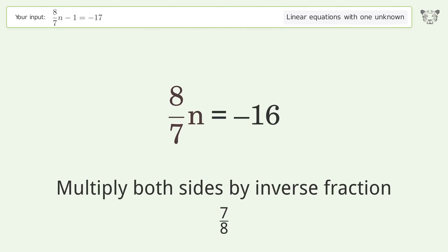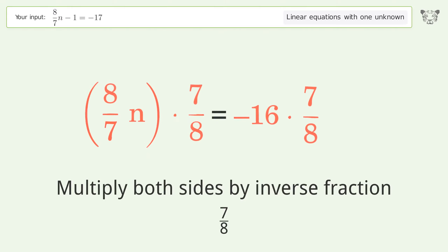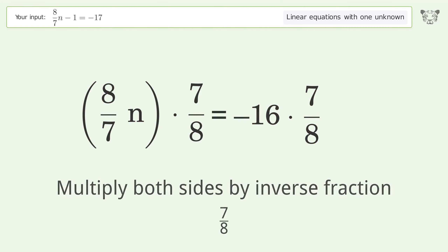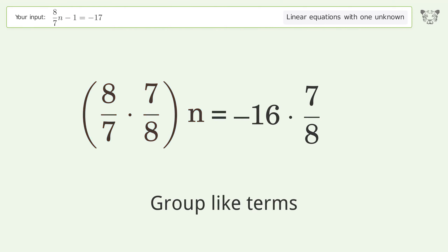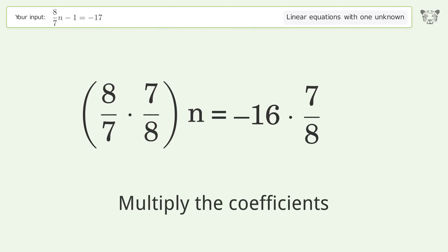Isolate n by multiplying both sides by the inverse fraction 7 over 8, then group like terms.